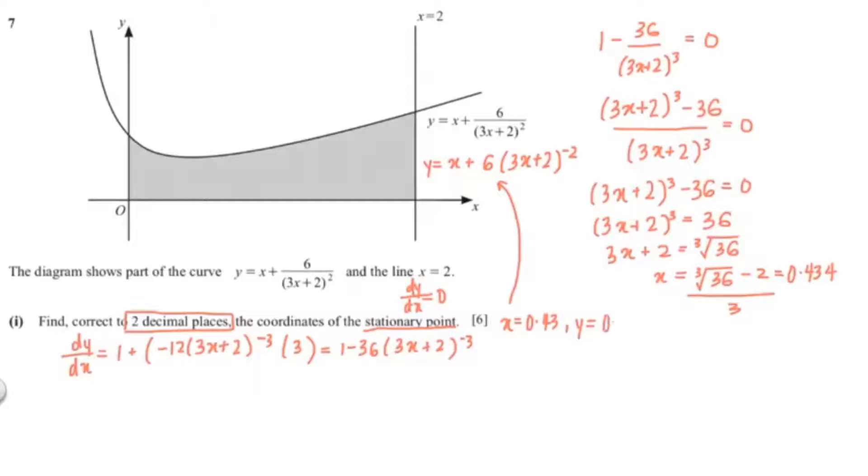Now that we've found our x, we can find our y by just substituting our x into the y equation, and that would give me 0.98. So our coordinates are 0.43 and 0.98.